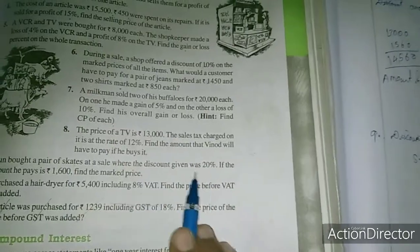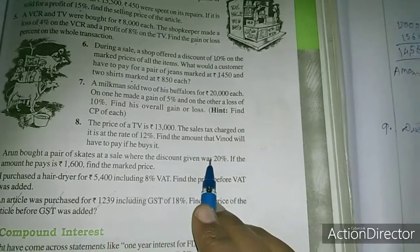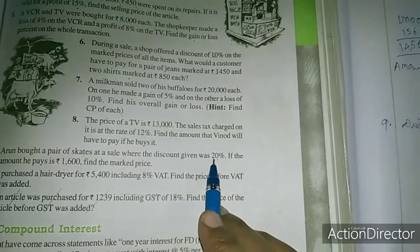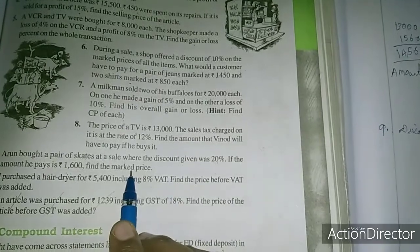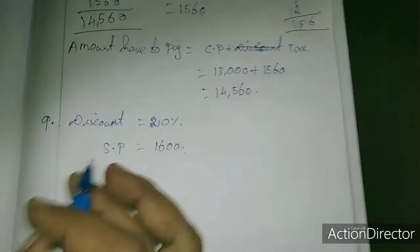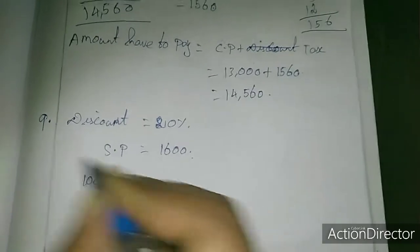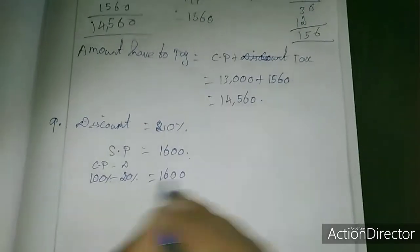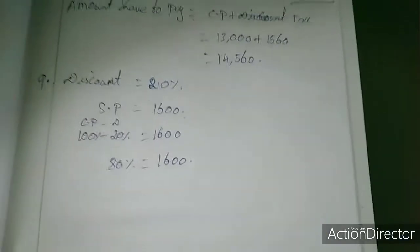Discount is 20%, amount paid is 1,600. This is the cost price minus discount, so that is 80%. So 80% equals 1,600. But we need to find 100%.